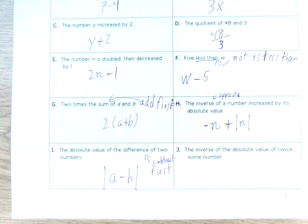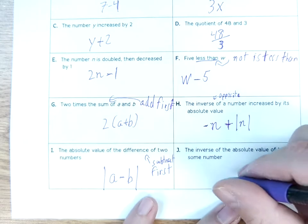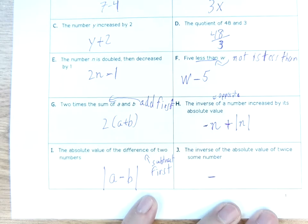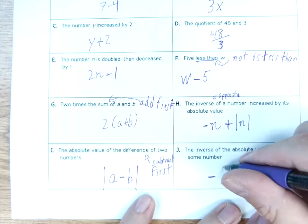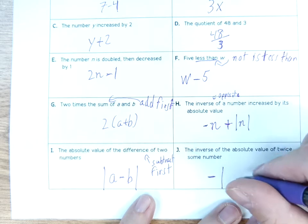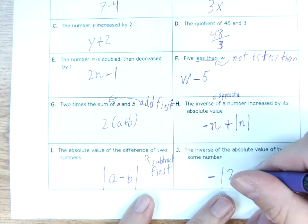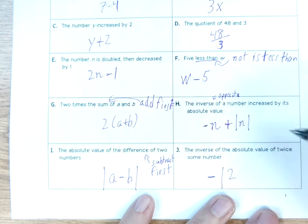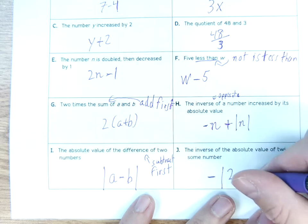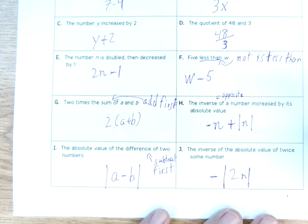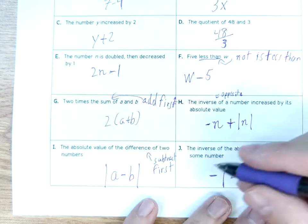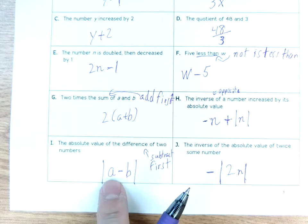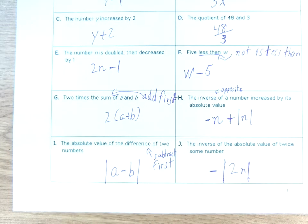'The inverse of the absolute value of twice some number.' The inverse means the opposite — negated. So if it's positive, it becomes negative; if it's negative, it becomes positive. Twice some number — you can use any variable, I'll use n. The absolute value of 2n, then negated: −|2n|. So we do the absolute value before we inverse it. This will always be negative because absolute value is always positive and then we negate it.